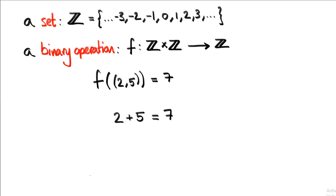To form a group, we need a set and a binary operation that works on that set. You can think of a binary operation as being a sort of relationship between elements of that set. Normally a function relates elements from one set to another, but a binary operation gives you some way of combining elements within the set you're thinking about and producing another element in that same set — a relationship between elements within a set, rather than between different sets.